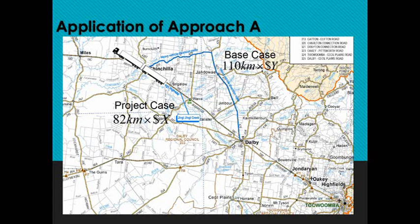Here we have a map of the Warragur Highway between Chinchilla and Dalby. In the base case, an alternative diversion route of 110 kilometres is required. To get the cost of travelling this route, we multiply the 110 km by the unit cost per vehicle, incorporating vehicle operating cost per kilometre and travel time cost. In the project case, vehicles only travel 82 kilometres along the Warragur Highway, which is likely a better quality road with a lower unit cost, faster travel speed, and lower vehicle operating costs.